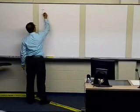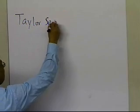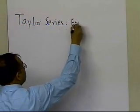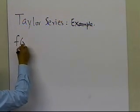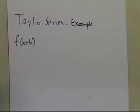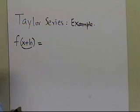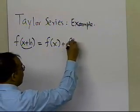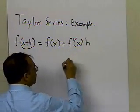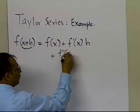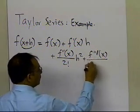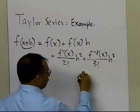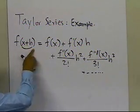In this segment, we're going to take an example of Taylor series and see how we can apply Taylor series to get the value of the function at some other point. The general form of Taylor's theorem is that the value of the function can be calculated at some point x plus h, if we know the value of the function at x, the first derivative at x, the second derivative at x, the third derivative at x, and so on and so forth.